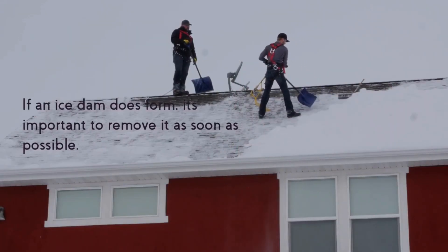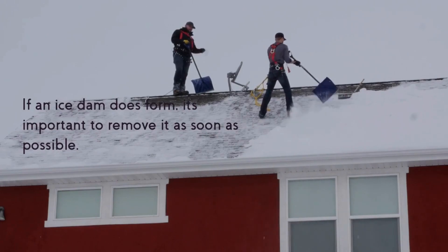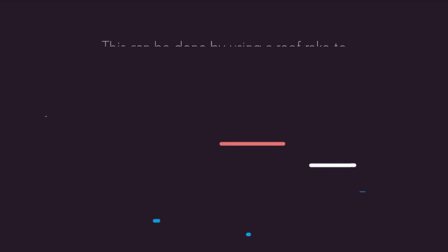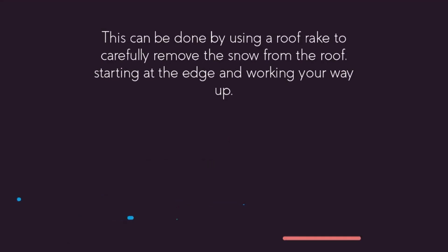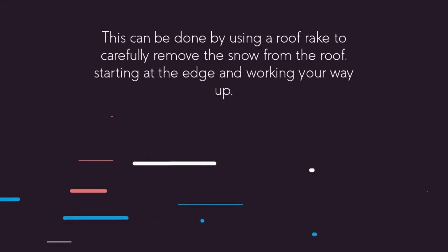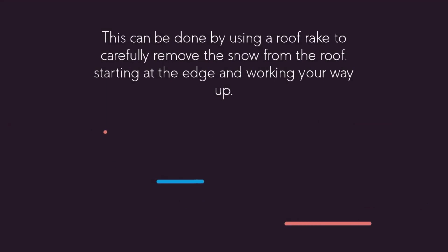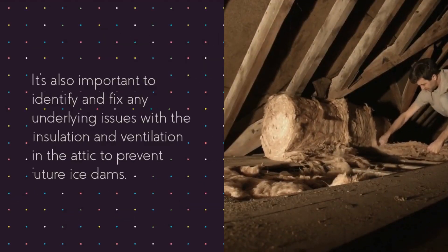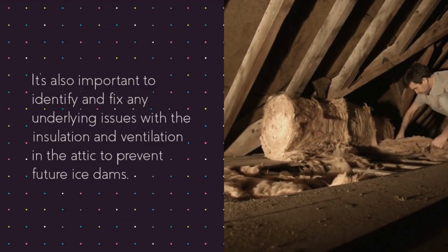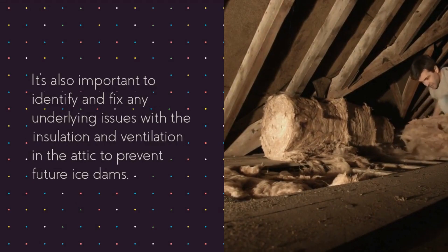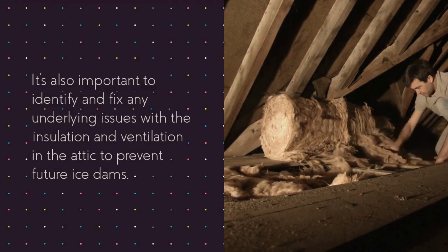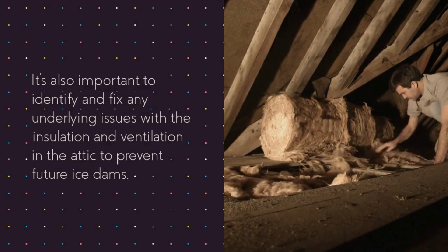If an ice dam does form, it's important to remove it as soon as possible. This can be done by using a roof rake to carefully remove the snow from the roof, starting at the edge and working your way up. It is also important to identify and fix any underlying issues with the insulation and ventilation in the attic to prevent future ice dams.